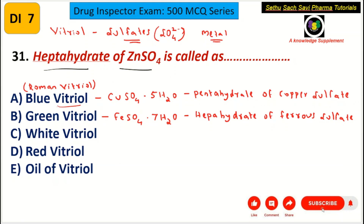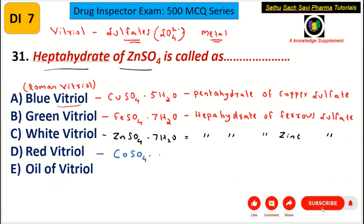White vitriol is zinc sulfate — ZnSO₄·7H₂O — with 7 water molecules, making it the heptahydrate of zinc sulfate. Red vitriol is the sulfate of cobalt — CoSO₄·7H₂O — again with 7 water molecules, so it is the heptahydrate of cobalt sulfate.